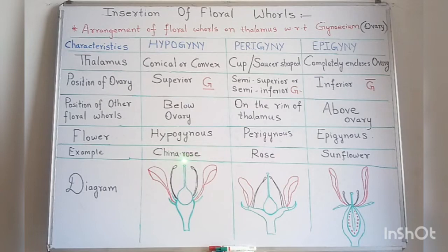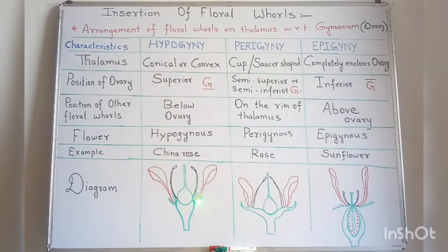The example of a hypogynous flower is china rose. We can see in this diagram the position of the ovary is superior, and the remaining floral whorls are present and arranged below the ovary — hence it is called hypogynous.